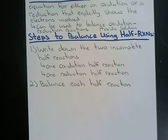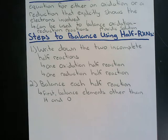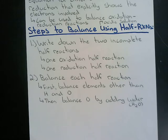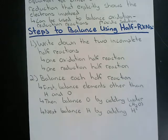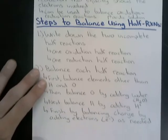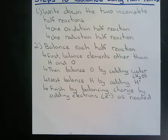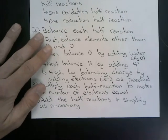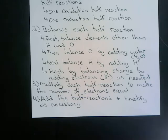Step 1: Write down the two incomplete half reactions — one oxidation half reaction and one reduction half reaction. Step 2: Balance each half reaction by: (a) balancing elements other than H and O; (b) balancing oxygens by adding water, H2O; (c) balancing hydrogens by adding H+; (d) finishing by balancing charges by adding electrons as needed. Step 3: Multiply each half reaction to make the number of electrons equal. Step 4: Add the half reactions and simplify as necessary. Step 5: Check that atoms and charges are balanced.